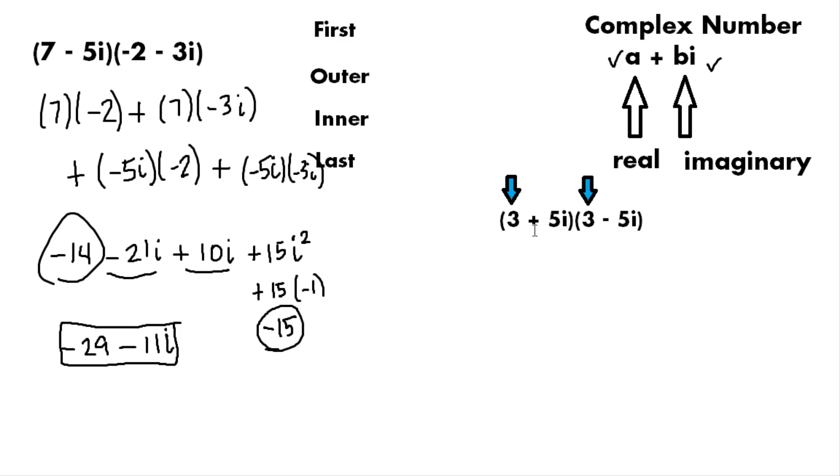So in this problem I have a 3 plus 5i and a 3 minus 5i. These two numbers are what we call conjugates. And so conjugates are things that share the same coefficients and then an alternating signs in between. In a generic form that would be a plus bi and a minus bi as an example.